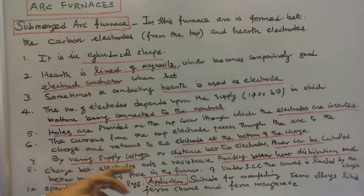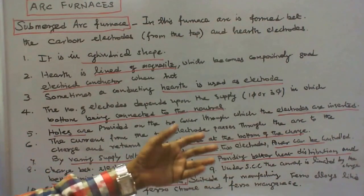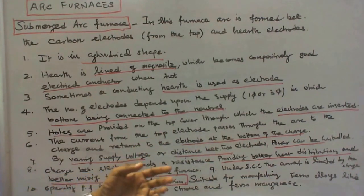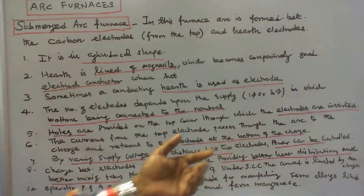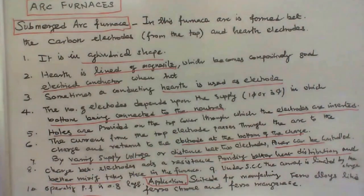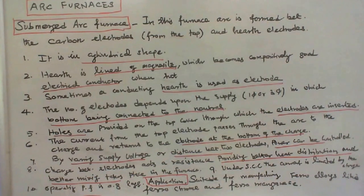By varying supply voltage or distance between two electrodes, power can be controlled. Charge between electrodes acts as a resistance providing better heat distribution and better mixing takes place in the furnace. Under short circuit condition, the current is limited by the charge itself. Its operating power factor is 0.8 lagging.